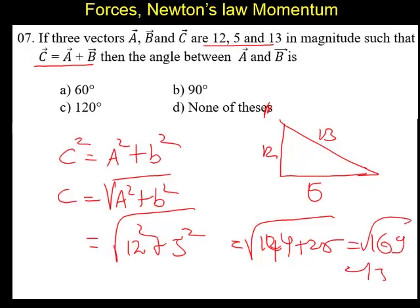So definitely this forms a right angle triangle. So 12, 5 and 13, this set forms a right angle triangle. So angle between 12 and 5 is 90 degree. So answer is B.